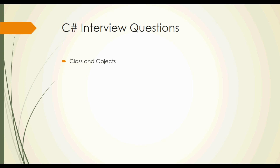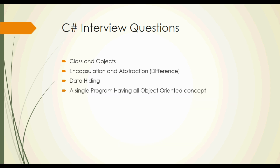What is class and objects? This is a basic question of C# OOP concepts. Learn what is class and objects, encapsulation, and abstraction. Differentiate between encapsulation and abstraction — where we need to use encapsulation and where we need to use abstraction.